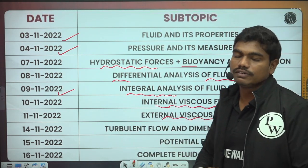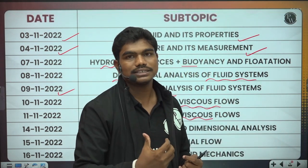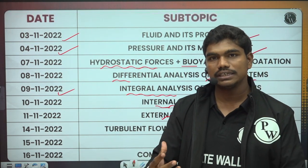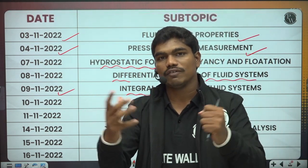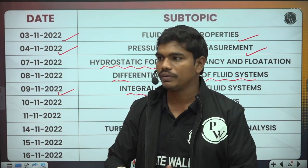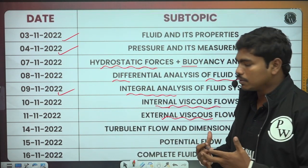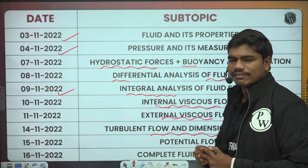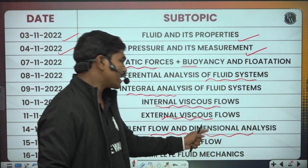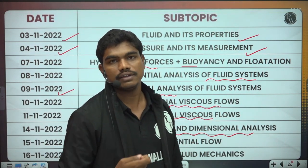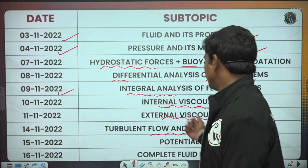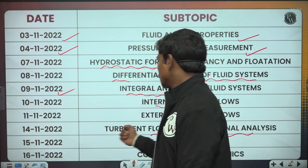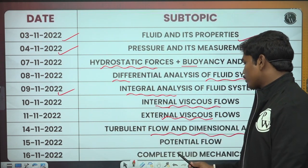On 11th November, we cover external viscous flow, including important concepts like the boundary layer, drag and lift forces — essentially what happens when a fluid flows externally over a body. Then on 14th November, we combine turbulent flow (a relatively smaller chapter) with dimensional analysis, which is a very important chapter for the GATE examination.